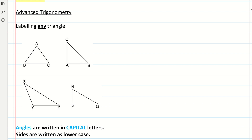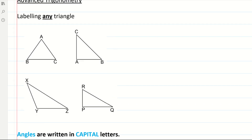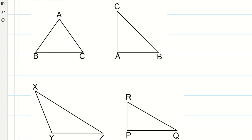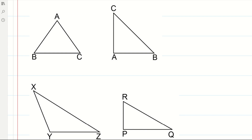Firstly, we're going to go through labelling any triangle, whether it's a right angle triangle or not. This is how you can label any triangle. The vertices are all capital letters, and we're going to label the angles in all capital letters. So this is angle A, this is angle B, and this is angle C — all capital letters.